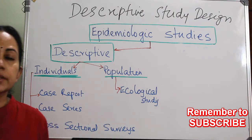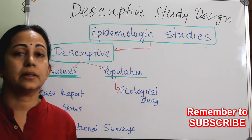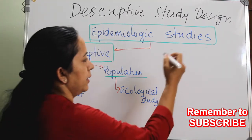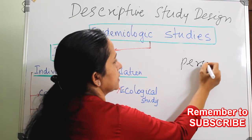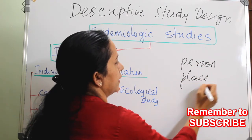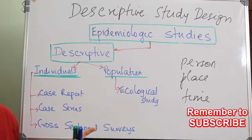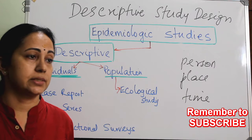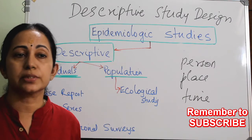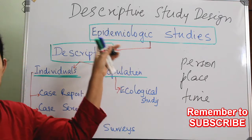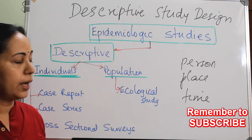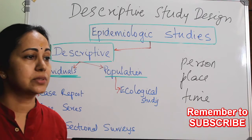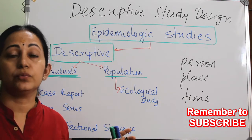The descriptive study design mainly examines the pattern of occurrence of a disease, describing the disease in terms of person, place, and time. This gives you an idea on the occurrence and prevalence of the disease — for example, what is the prevalence of tuberculosis in a specific community? So this descriptive study is otherwise called a prevalence study. It generates hypothesis; it is not testing hypothesis. If you are going to test the hypothesis, it becomes an analytical study, so this gives you an idea on future research.